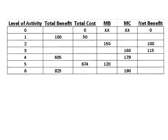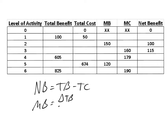Let's look at a problem where we have to fill in the blank for some of these missing spaces. In order to do this, we need to know how we solve for some of these different areas. First and foremost, how do we get net benefit? Net benefit is simply equal to the total benefit minus the total cost. Marginal benefit is calculated by taking the change in total benefit divided by the change in the level of activity. And marginal cost is simply the change in total cost divided by the change in activity.